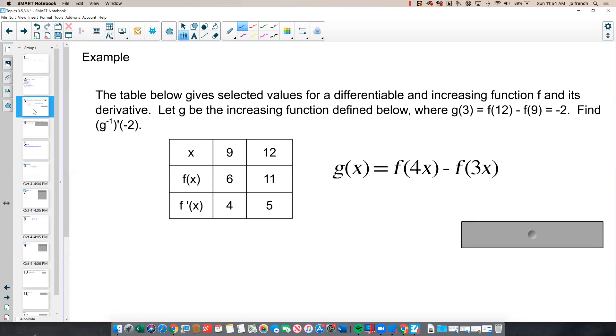To find g inverse of negative 2, since g of 3 equals negative 2, then it stands to reason that whatever g prime of 3 is, that g inverse of negative 2 would be 1 over that answer.